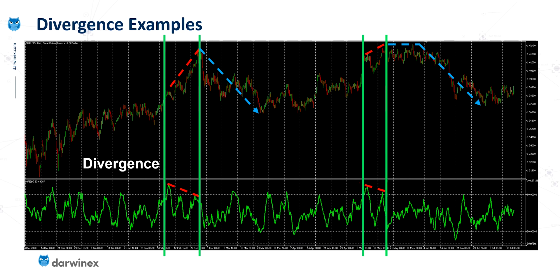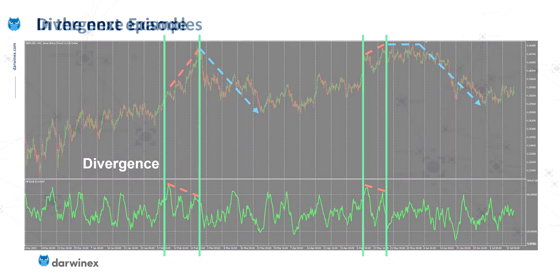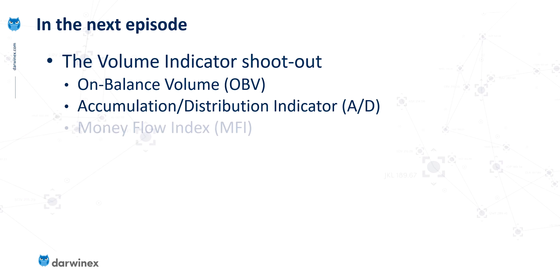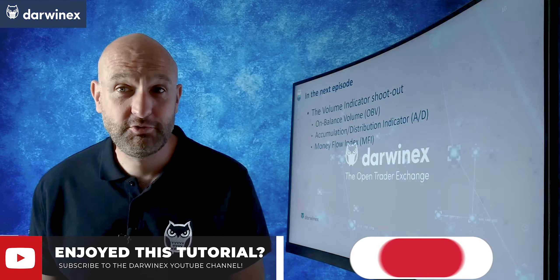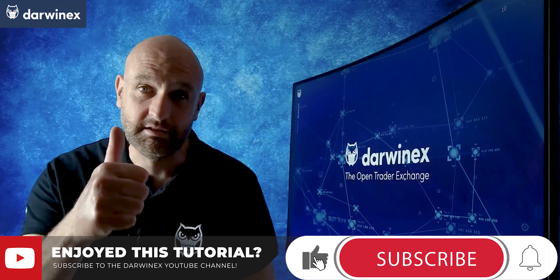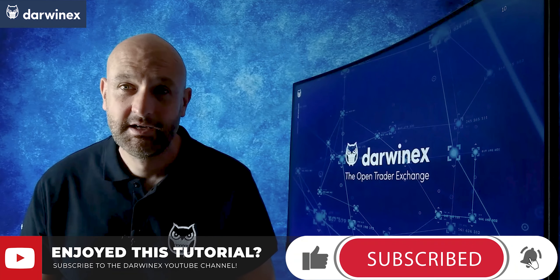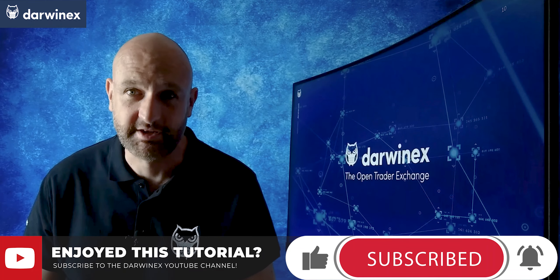We've now spent quite a lot of time looking at various options for analyzing volume data, including raw volume and the three indicators. In the next episode I'm going to hold a volume indicator shootout, comparing side by side: On Balance Volume, Accumulation Distribution, and the Money Flow Index. Be sure to tune into that episode, remember to give me a like if you've got value from today, and until next time — trade wise, trade safe.